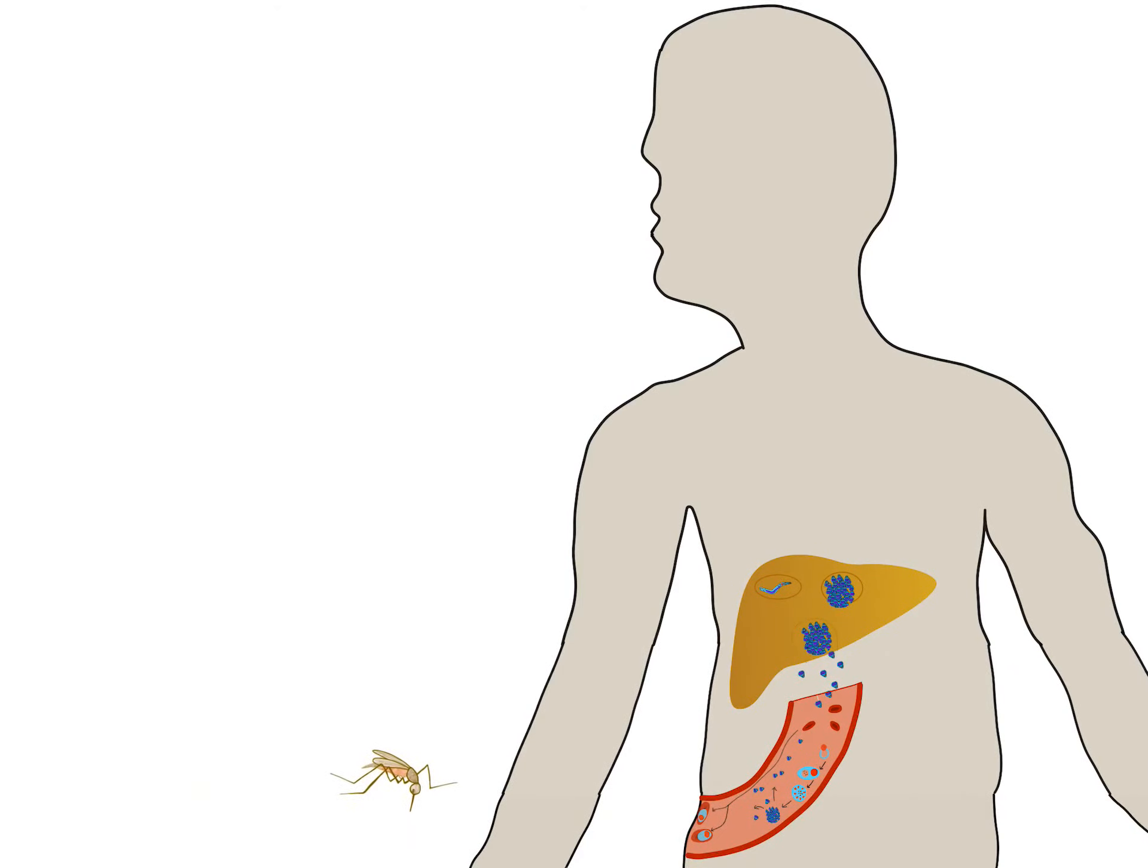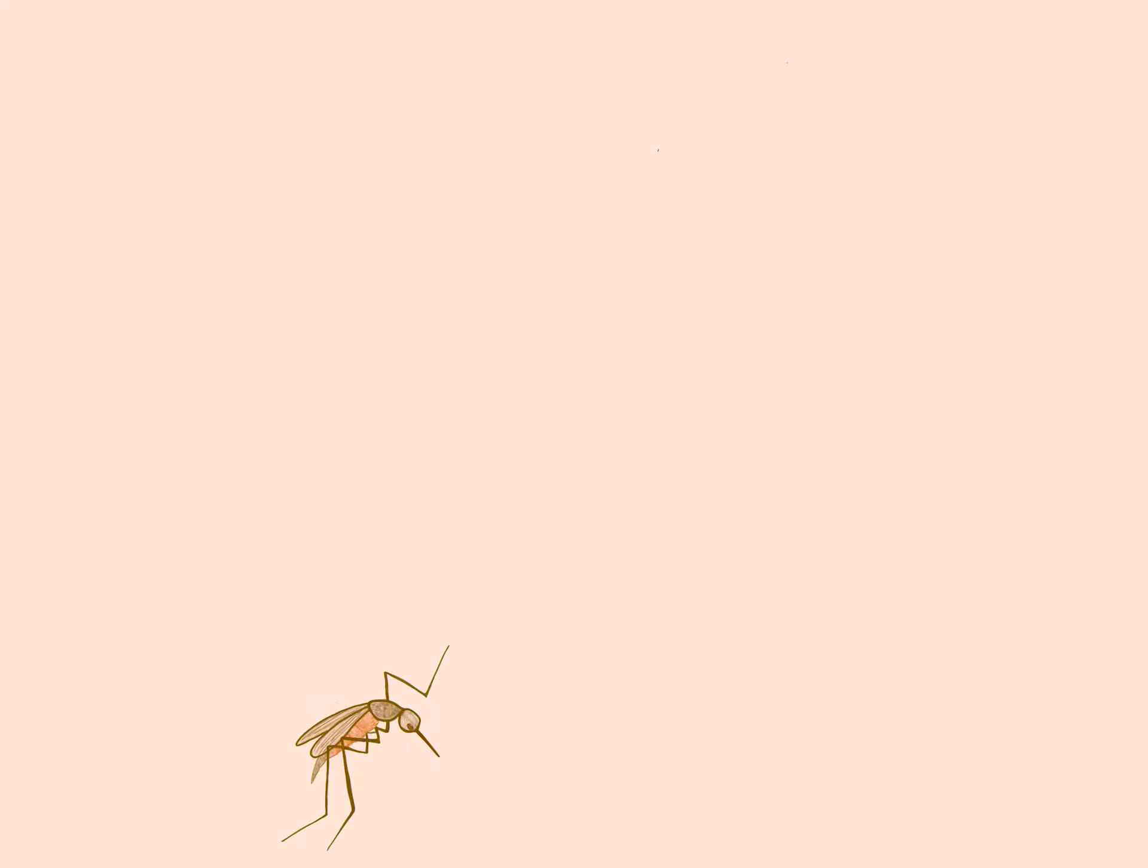When a mosquito bites an infected human, it ingests the blood cells containing gametocytes, which develop further into mature sex cells called gametes.